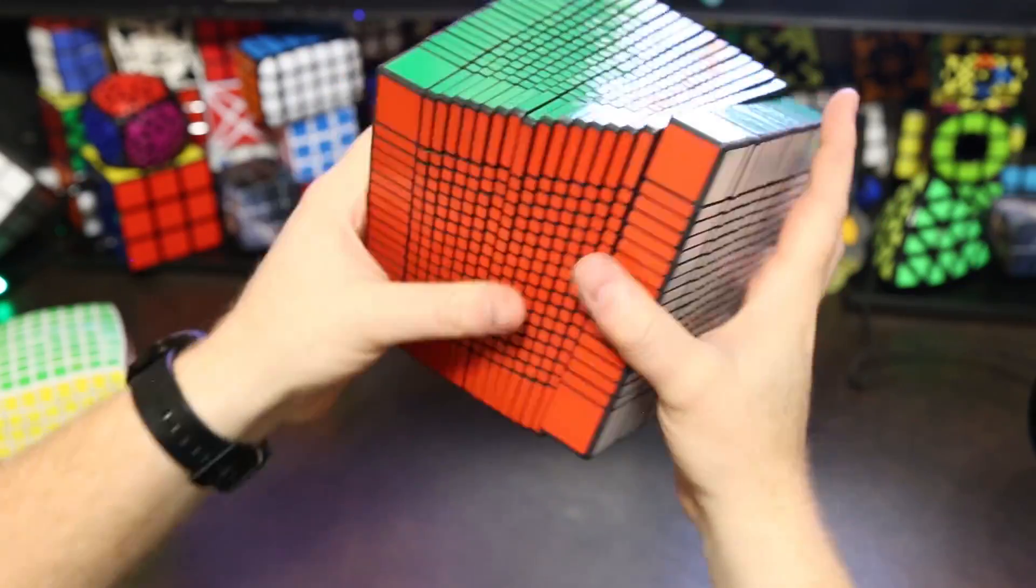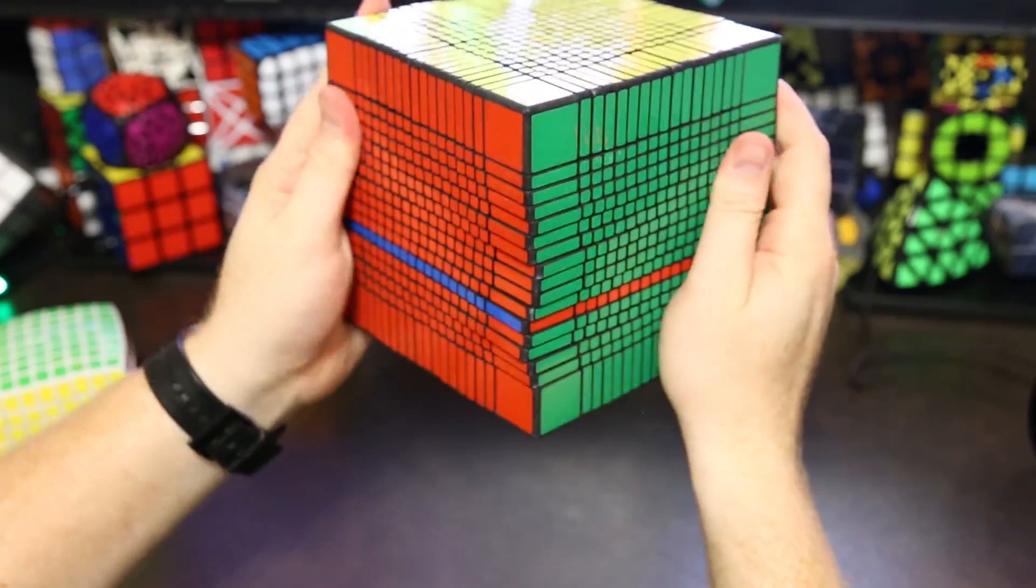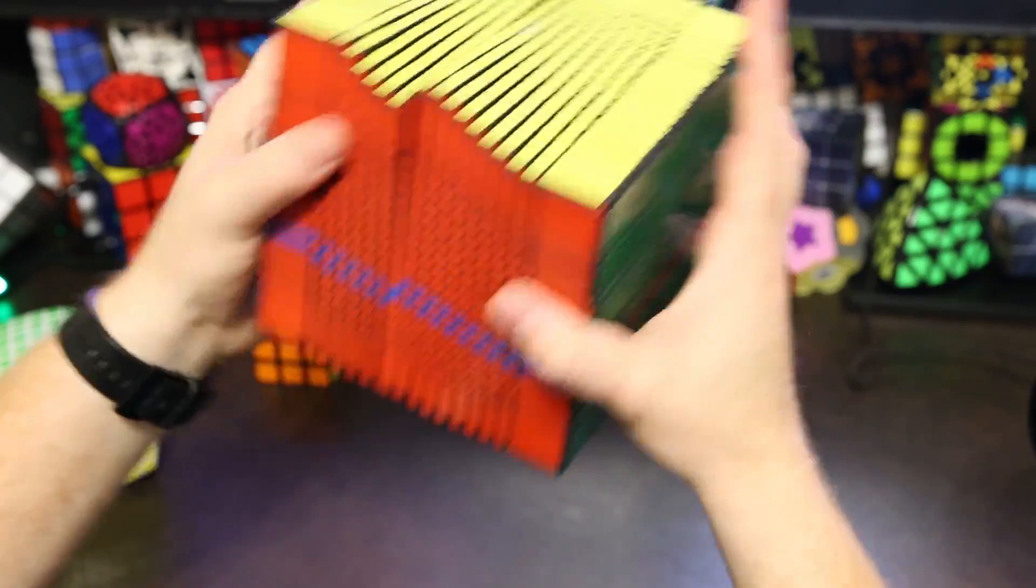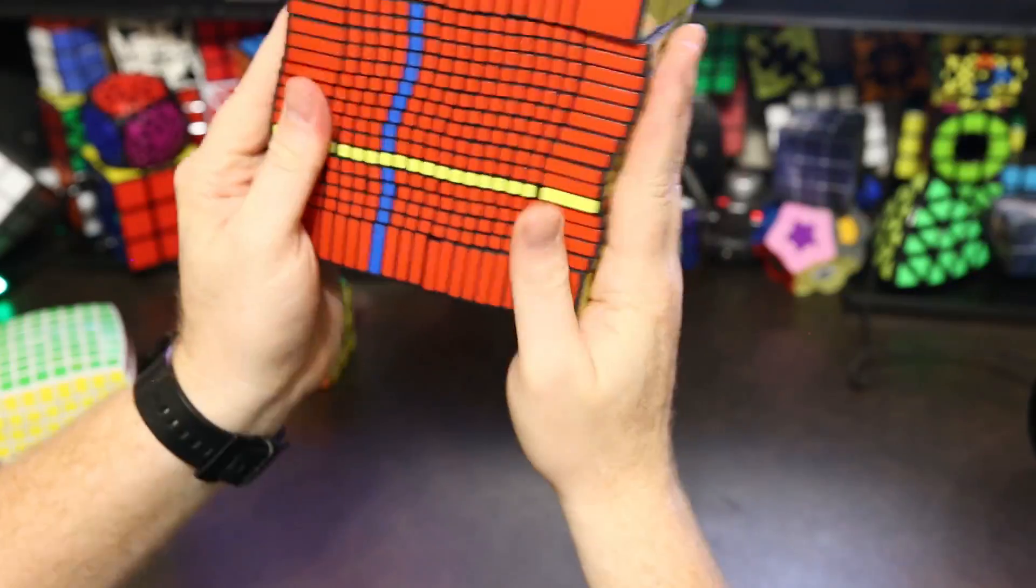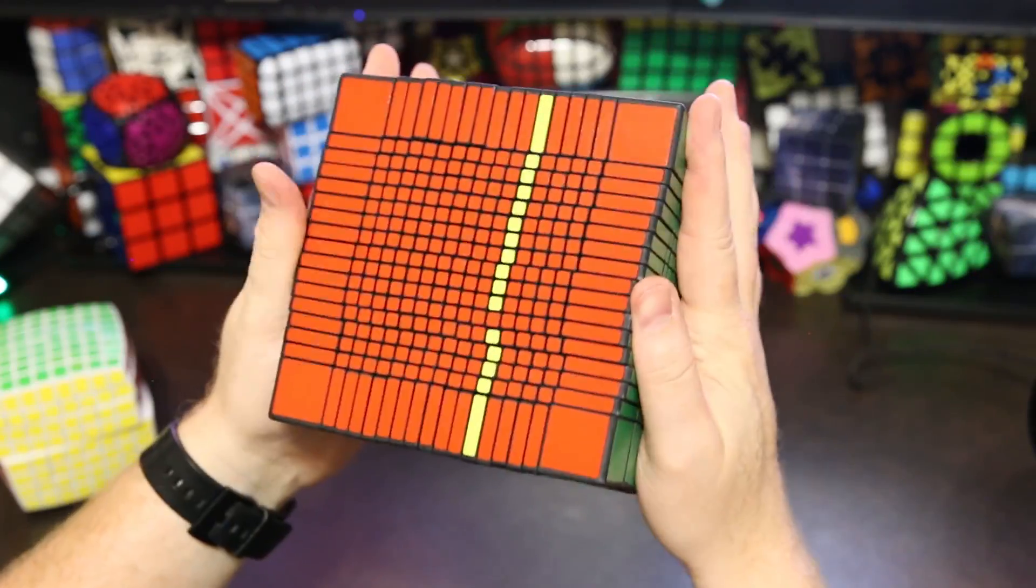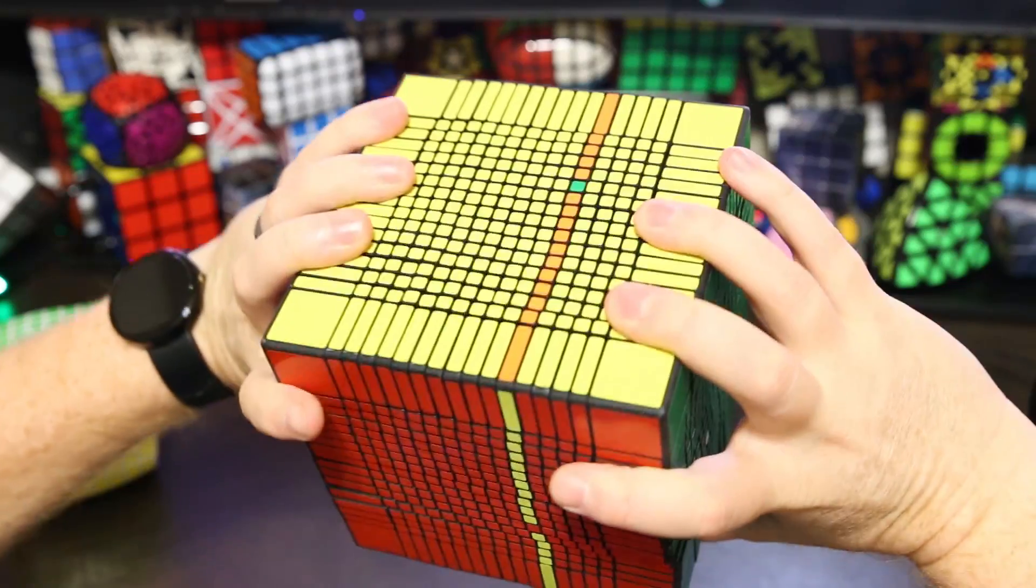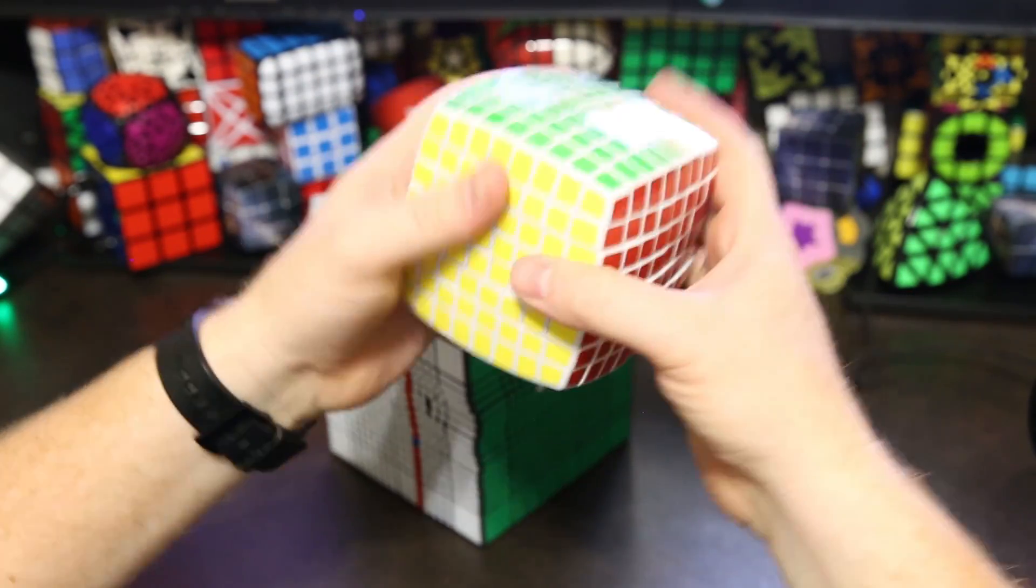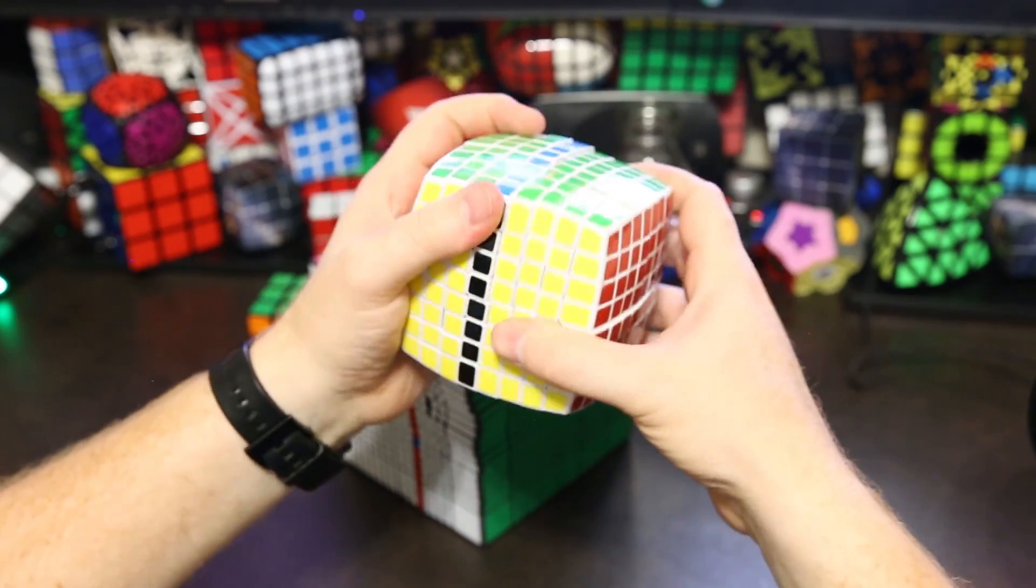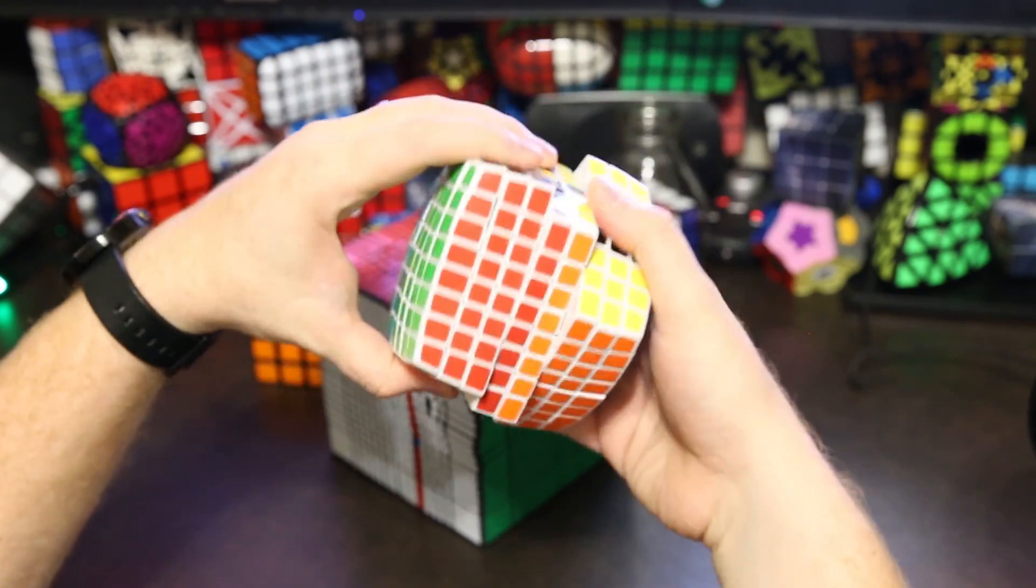It actually turns pretty well. And so once you turn one layer, one layer turns pretty well. What's hard is actually aligning the puzzle so that you can only turn one layer. And the reason it's so hard to align is it's just so big I can't get my hands around it. Like an 8x8. Here's an 8x8. I can easily grip an 8x8. And so aligning an 8x8 isn't that difficult because I can keep it aligned the whole time.